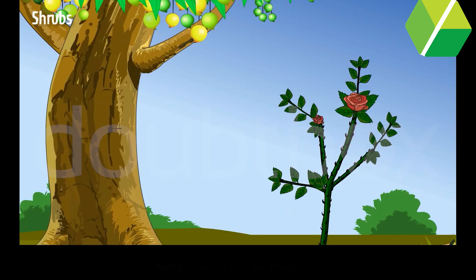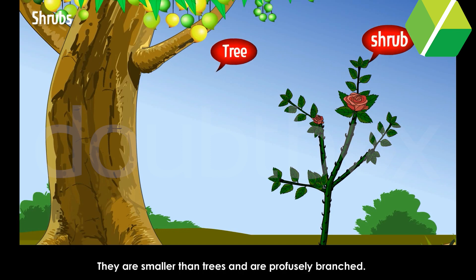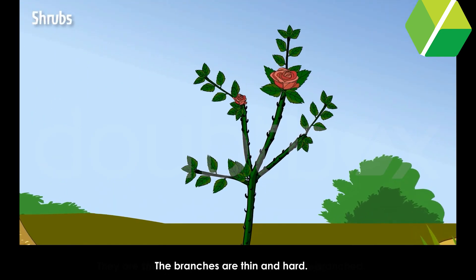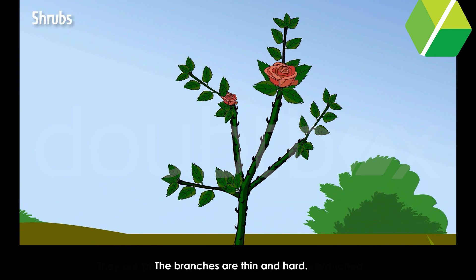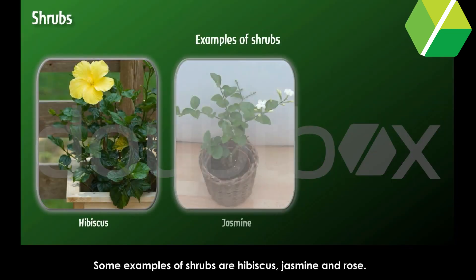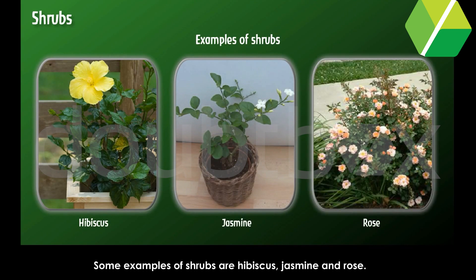Shrubs: Bushy plants are called shrubs. They are smaller than trees and are profusely branched, that is, they have a number of branches. The branches are thin and hard. Some examples of shrubs are hibiscus, jasmine and rose.